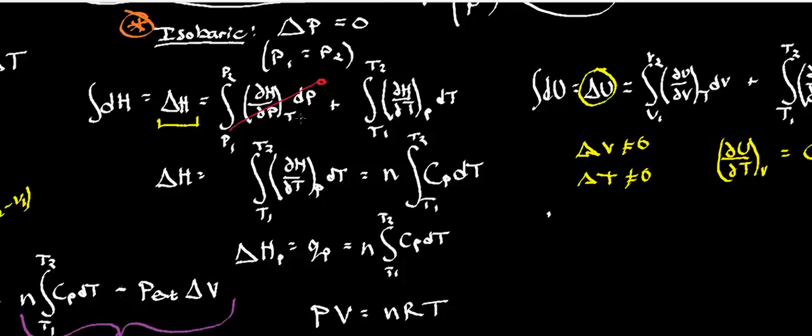And it turns out that it's similar in nature, but you have to remember that enthalpy is instead a function of pressure and temperature, not volume and temperature. So when I do this, I get delta H is equal to the partial of H with respect to P at constant T, dP from P1 to P2, plus the partial of H with respect to T at constant P, dT from T1 to T2.